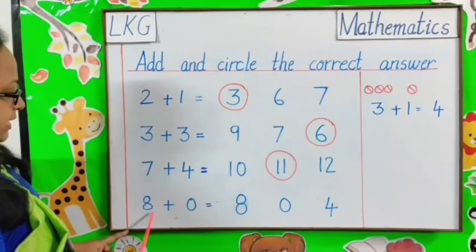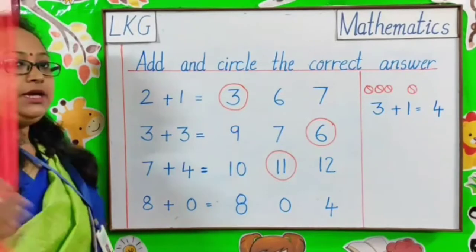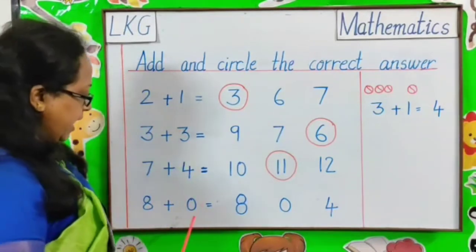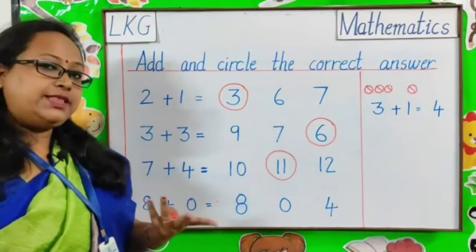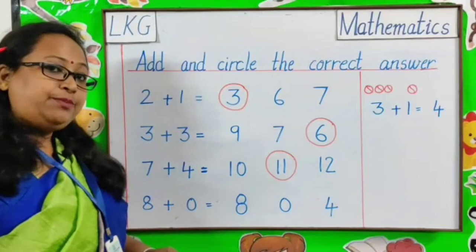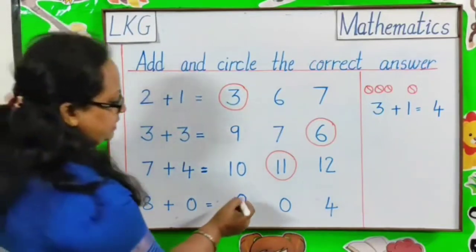Last. 8 plus 0. 8 in my mind, 8 and 0 finger. 0 means nothing. So, 8 plus 0 is equal to 8. Answer is 8.